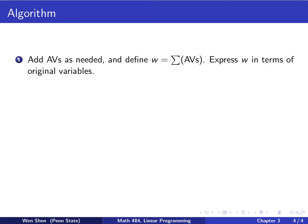Okay, so after all this discussion, let's do a summary of our algorithm. The algorithm involves multiple steps. So, first step, we add artificial variables as needed, and then we define w to be the sum of all the artificial variables, and then we express w in terms of the original variables. Okay, so this step can be done in LP Assistant by just clicking.